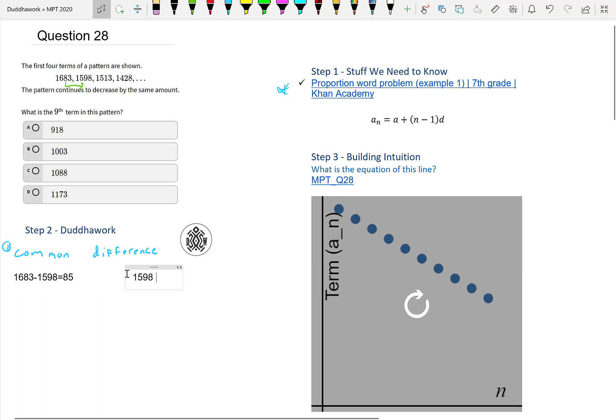So it's 1598 minus 1513 equals 85. And if you want, so that's how much you subtract every time. So that would be minus 85 minus 85 minus 85. So if you want, you could do that by hand, just do it one by one by one.